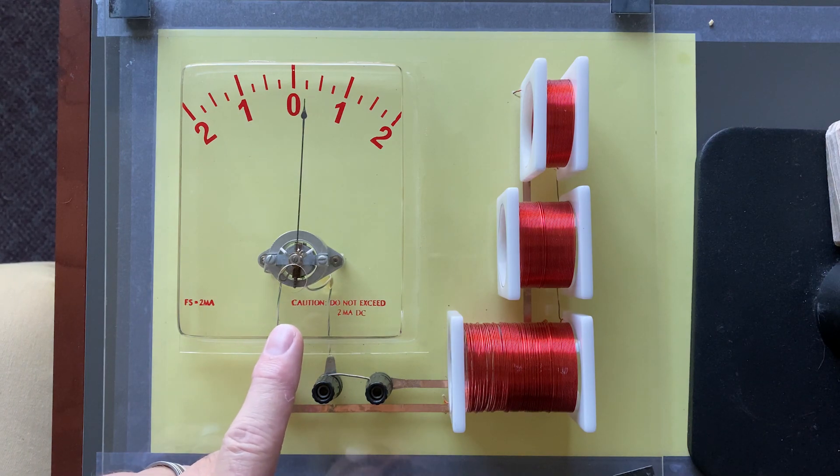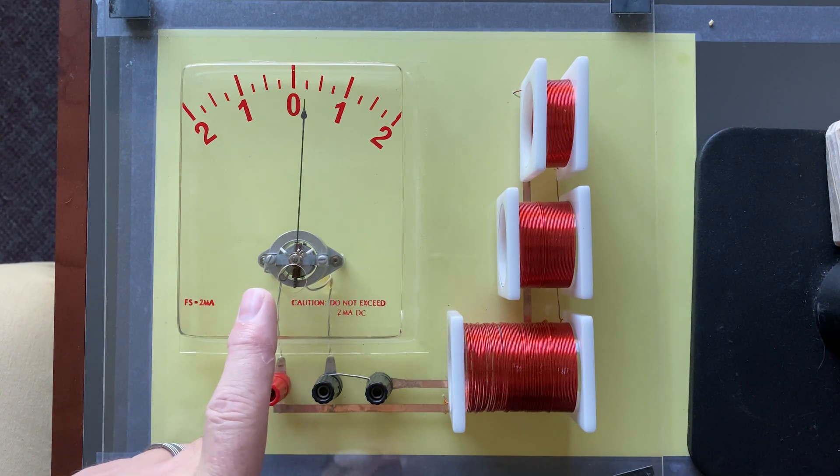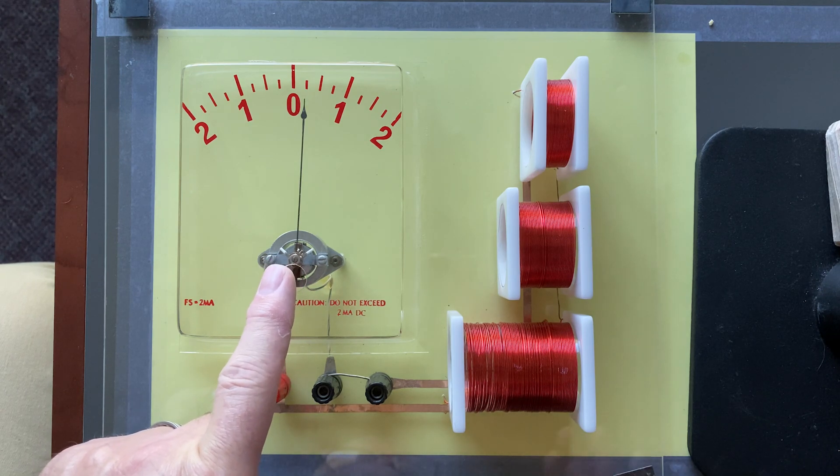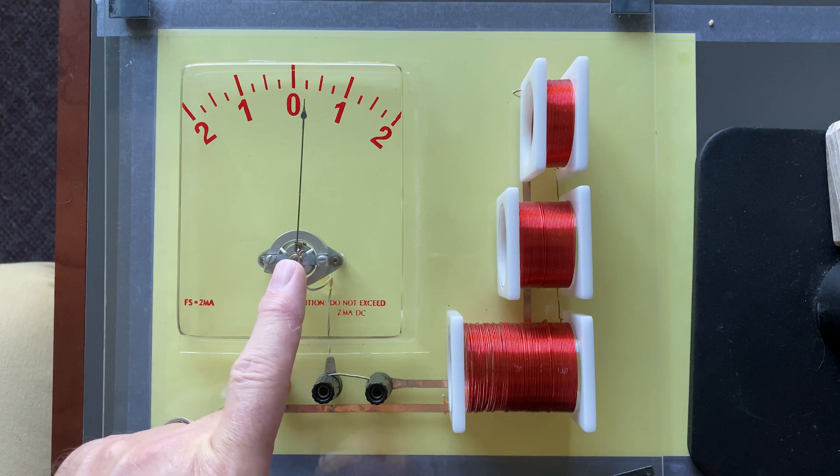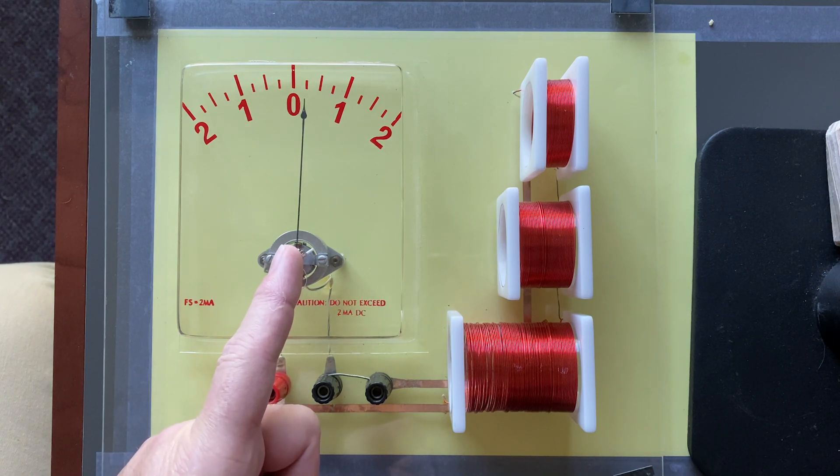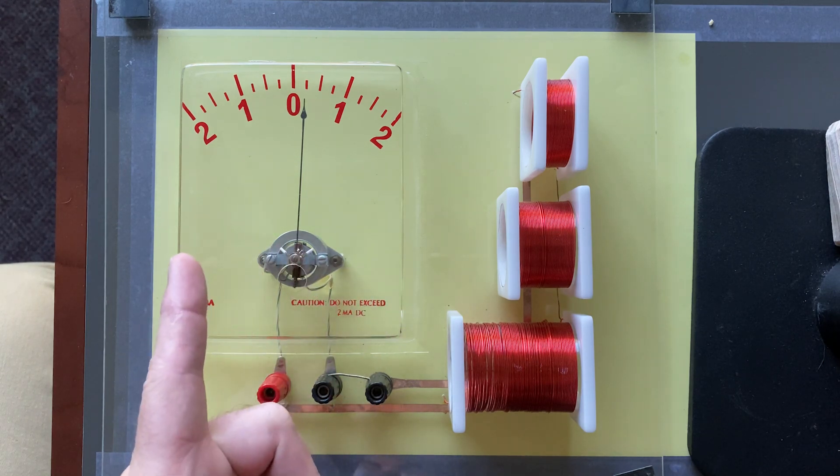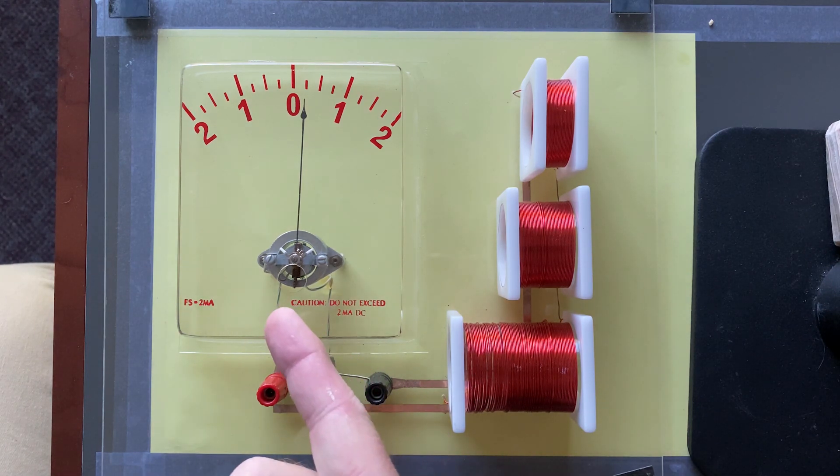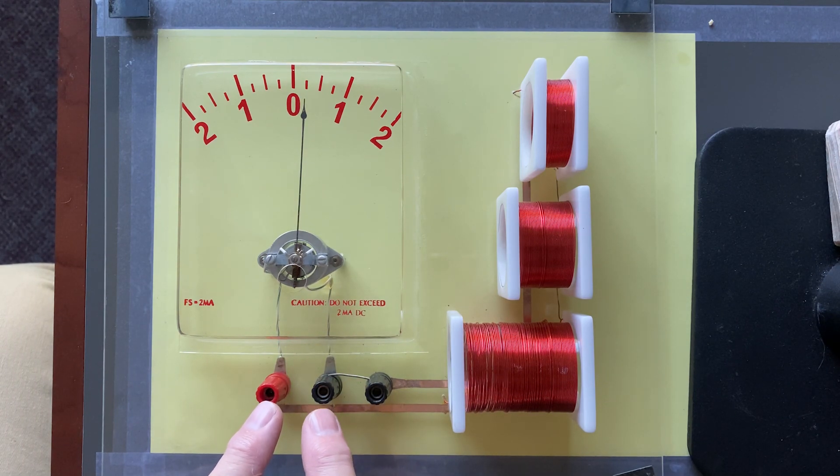What we have here, this device, is a galvanometer. Even though it's not centered exactly at zero—part of that has to do with the angle of the phone—you can see that there's a needle in the middle, and it can go one way or another, back and forth. What it does is it registers very small amounts of current.